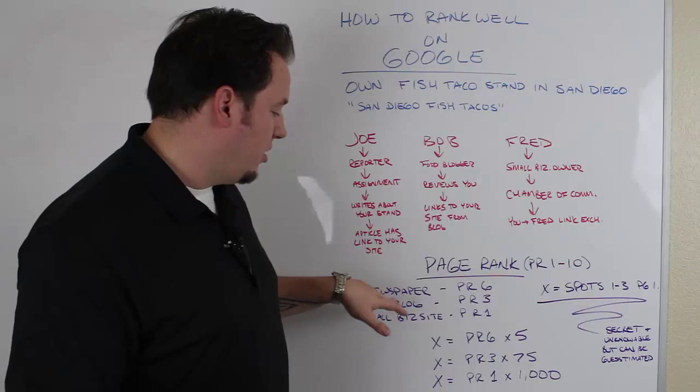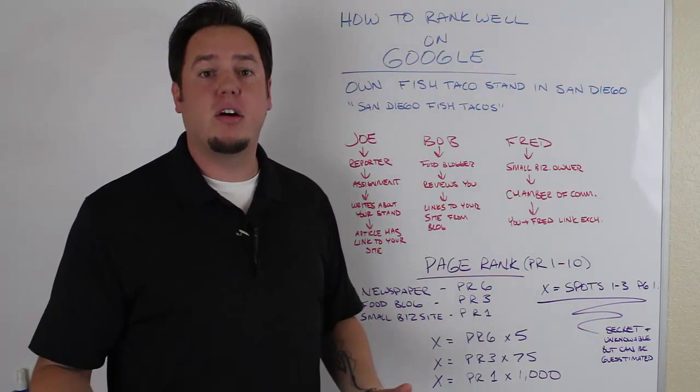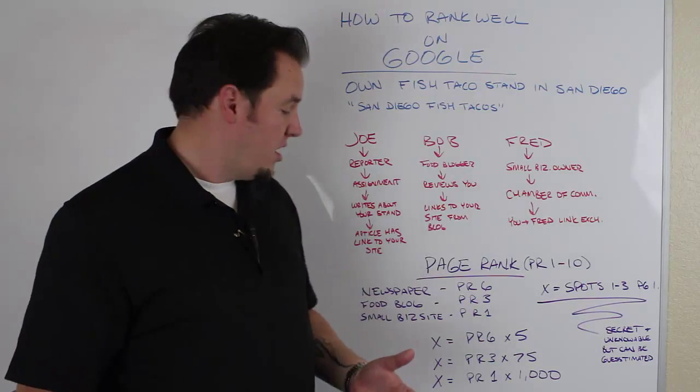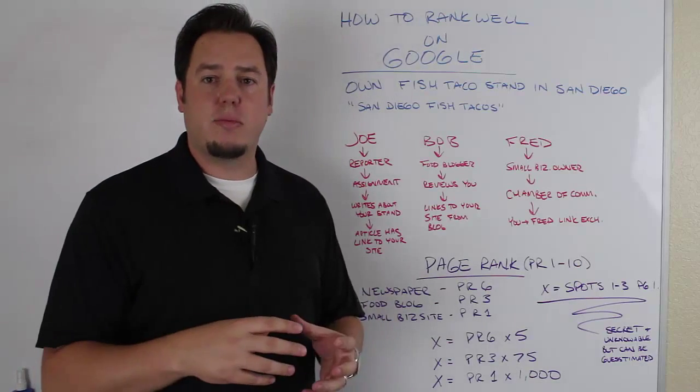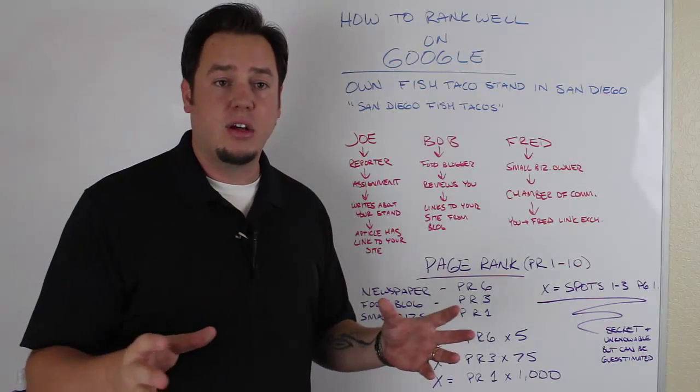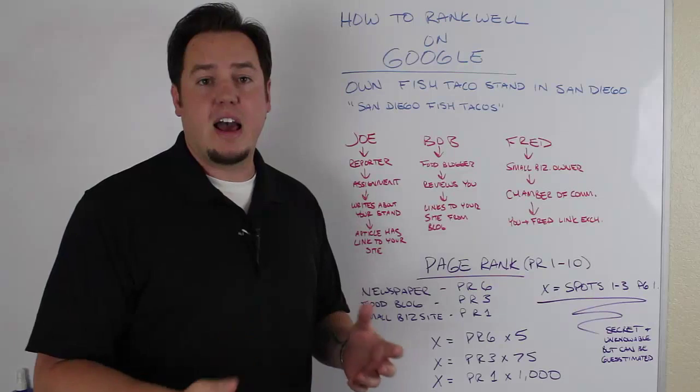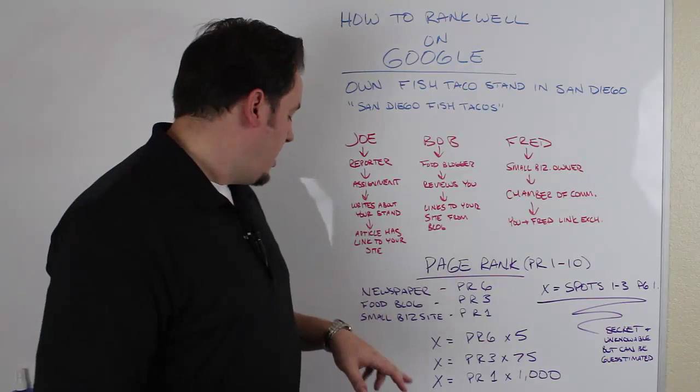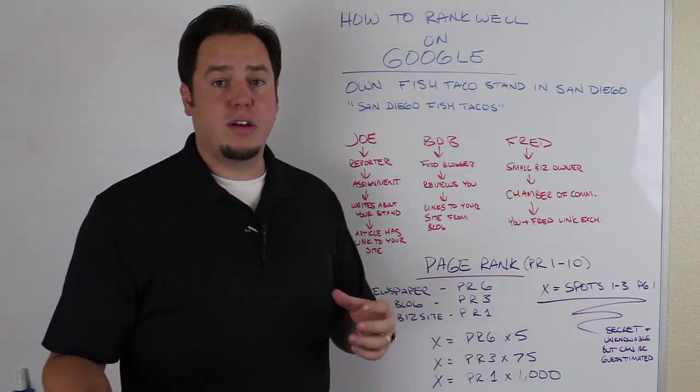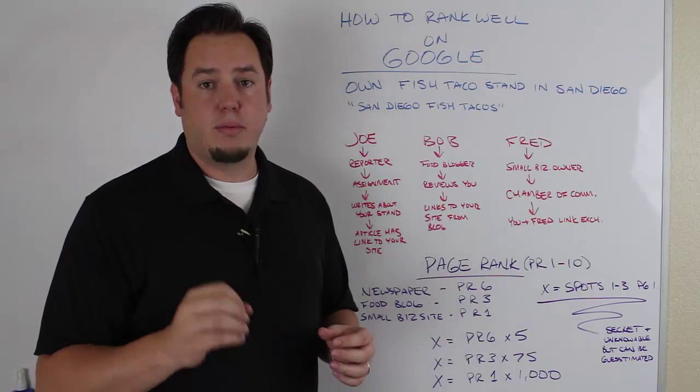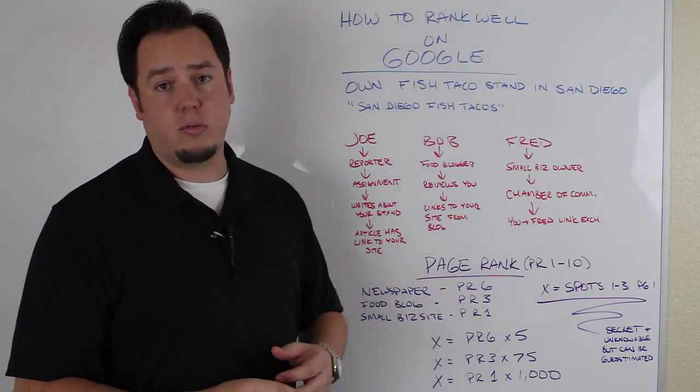So the local newspaper might have what's called a PR6, a page rank 6, all right? Whereas the food blog, if it's a smaller personal blog that's not national, that's just local, then it might have like a PR3. And then a small business site, maybe it's only got one or two pages, it's a simple brochure site. Maybe that's only a PR1.